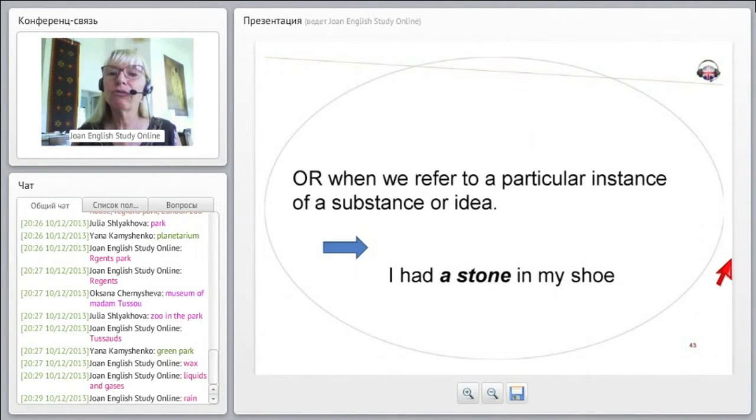Or when we refer to a particular instance of a substance or idea. This one's wrong: I had a stone in my shoe. This is a bad example. I don't know who wrote this because stone is countable. You have stones. I have two stones in my shoe. You can count them.